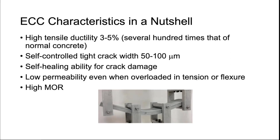In summary, ECC is a ductile concrete material with a tensile strain capacity of three to five percent — several hundred times that of normal concrete or FRC. Crack widths during the strain hardening stage are maintained below 100 microns. It self-heals with only air and water, has low permeability even when overloaded into the strain hardening stage, and also has very high modulus of rupture due to prevention of brittle fracture from the tensile side of a beam.